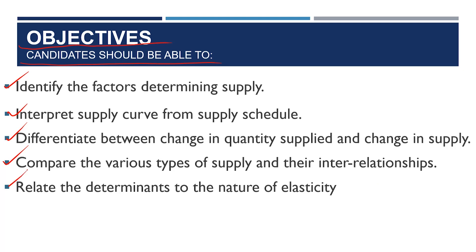The other objective we'll be looking into here is to relate the determinants to the nature of elasticity. Elasticity is coming in here. That's why I told us when we were looking at the nature, the determinant, and then the measurement of elasticity under demand, I said this is one area we should not be taking for granted. Now you can see the word elasticity is also coming out.